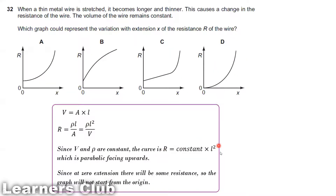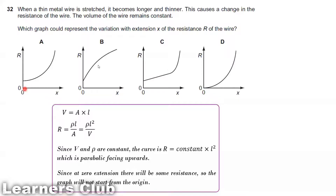Resistance is directly proportional to L squared, which is an equation of a parabola facing upwards. Also, at zero extension we still have some resistance, so the graph will not start from the origin. It should be a parabola facing upwards, not starting from the origin. So the answer is option A.